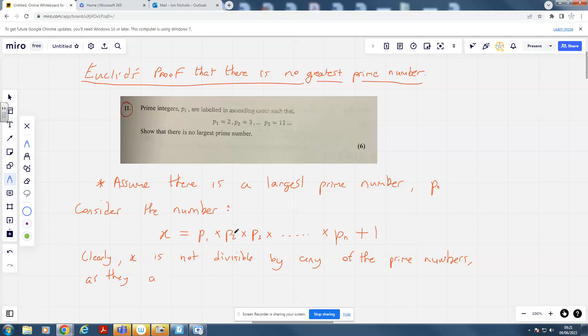It's also 1 more than a multiple of 3, because P2 is 3. It's also 1 more than 5, because P3 is 5, etc. So I can say X is not divisible by any of the prime numbers, as they all leave a remainder of 1 after division.